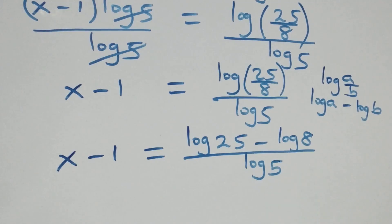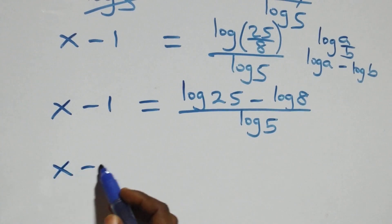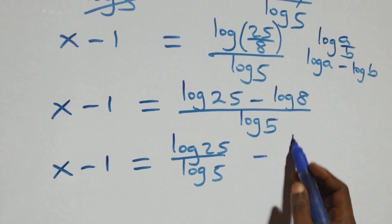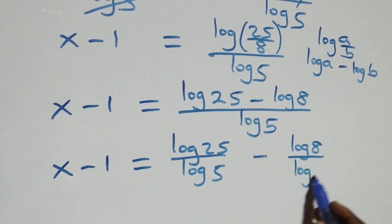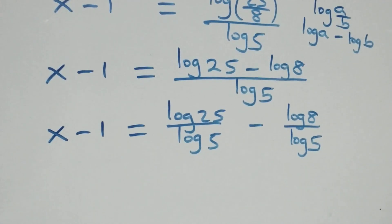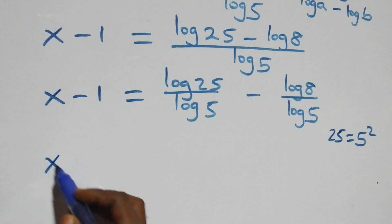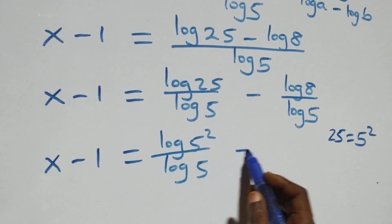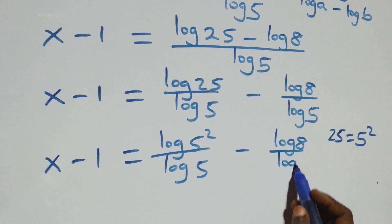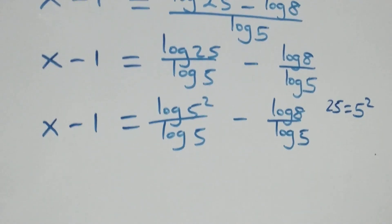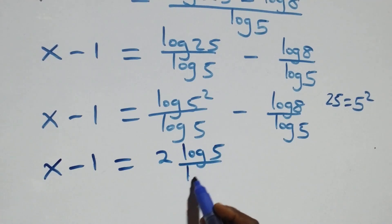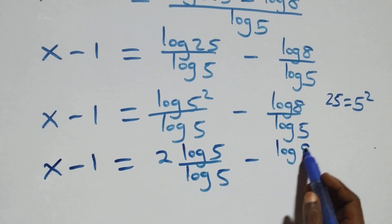Separating into two fractions: x minus one equals log 25 over log 5 minus log 8 over log 5. Since 25 equals 5 squared, we write log(5 squared) over log 5. Applying the power rule, the 2 comes down: x minus one equals 2 times log 5 over log 5 minus log 8 over log 5. The log 5 terms cancel, leaving x minus one equals 2 minus log 8 over log 5.